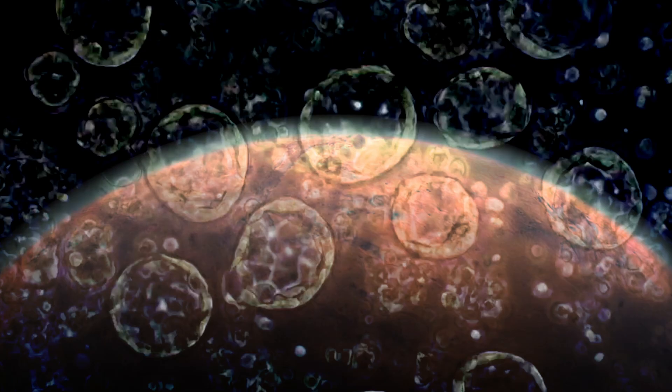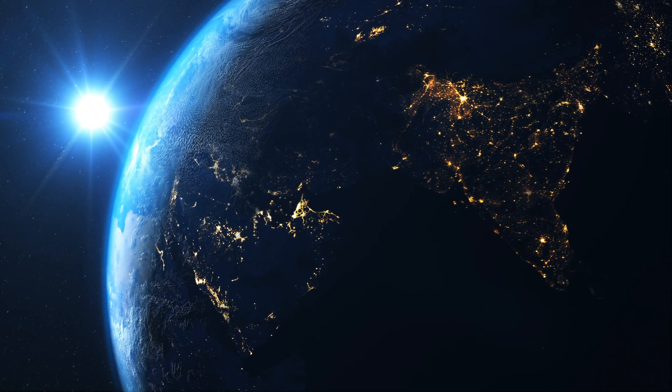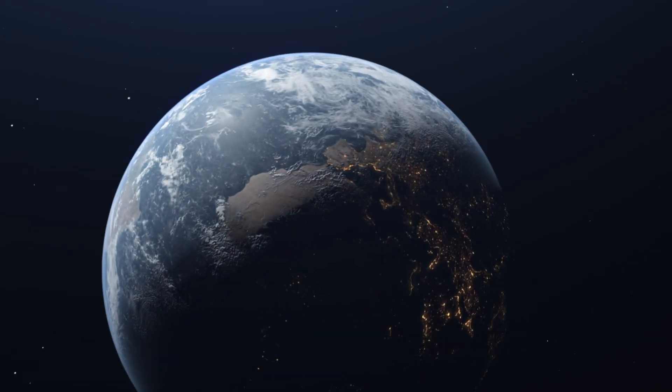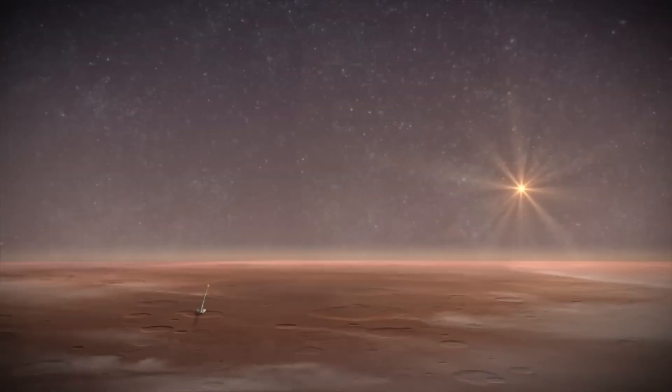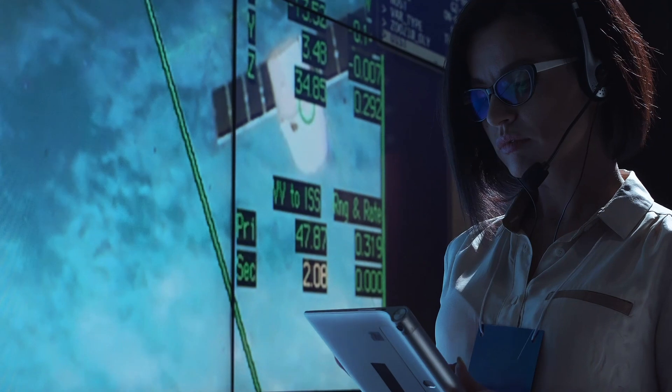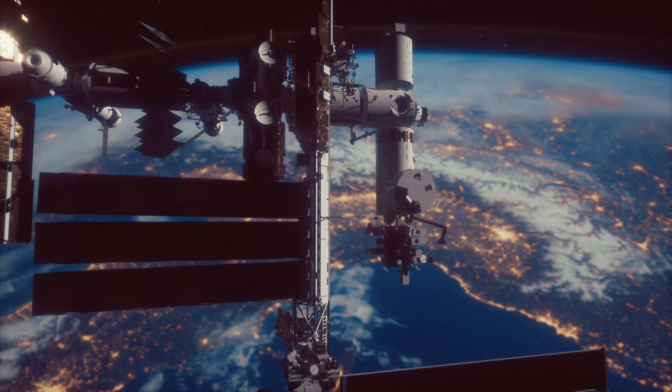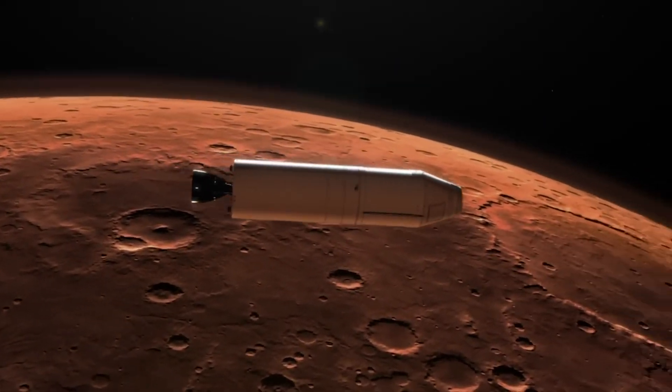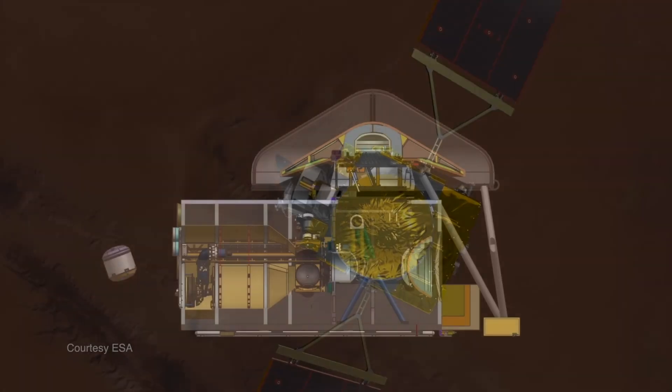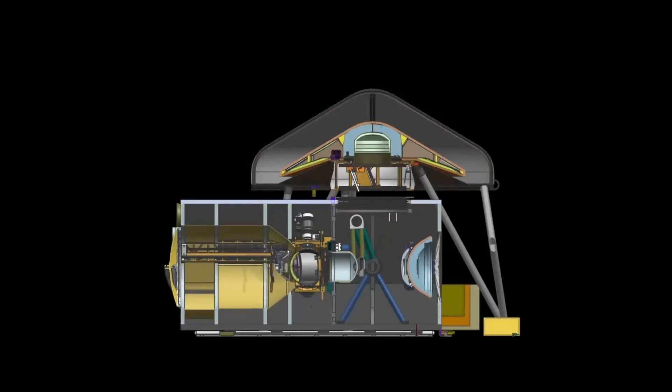From an ethical point of view, the act of bringing Martian life to Earth raises profound questions. Do we have the right to expose our planet to such risks? What responsibilities do we have to protect our own biosphere and ensure the safety of all life on Earth? These questions demand a cautious and thoughtful approach to space exploration and sample return missions. Faced with these risks, space agencies such as NASA and international regulatory bodies emphasize strict planetary protection protocols. Any mission designed to return samples from Mars to Earth must include measures to prevent the accidental release of Martian material into the environment. This includes secure sample containment, rigorous testing and quarantine procedures, and detailed risk assessments.